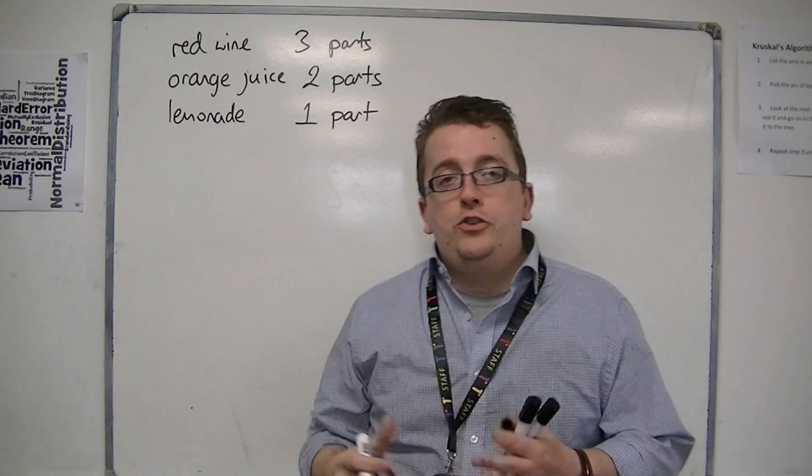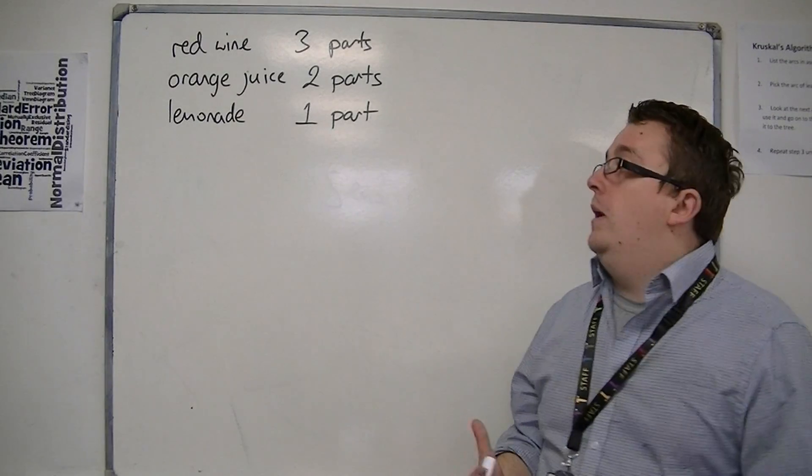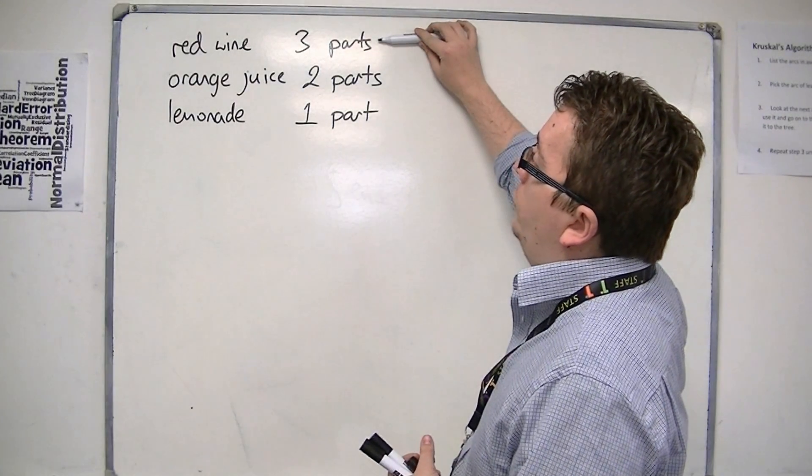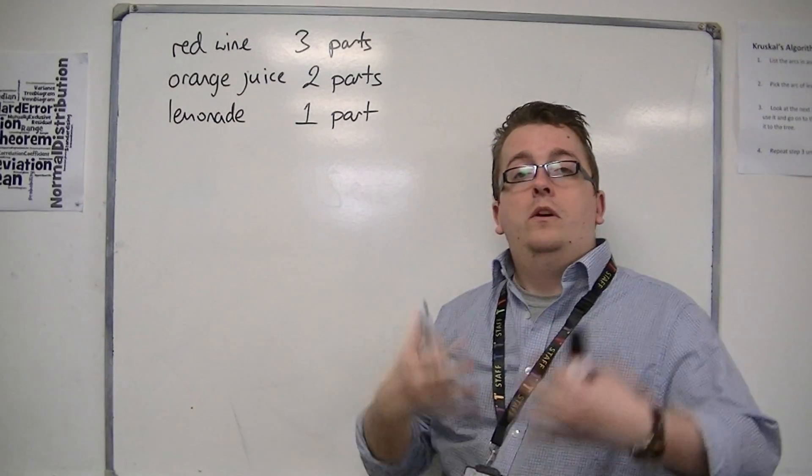So this tells you how much you will need of each. So if you had 300ml of red wine, 200ml of orange juice, or 100ml of lemonade.